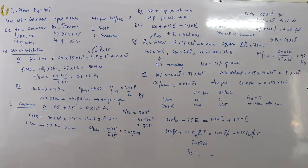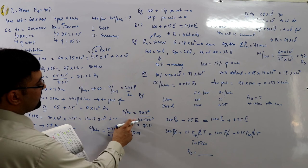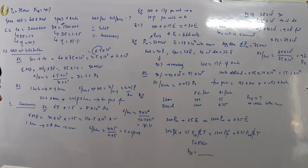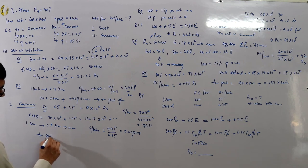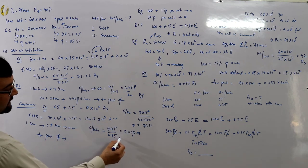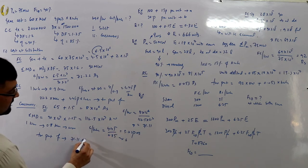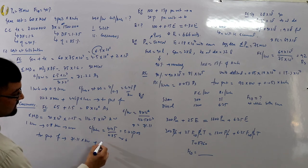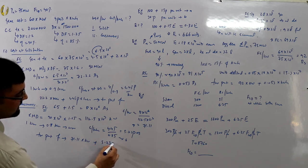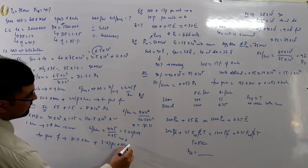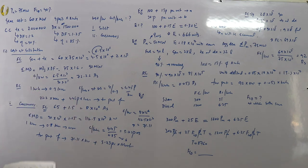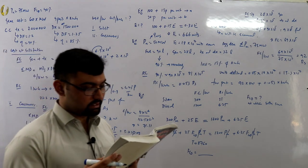The cost per kilowatt decreased because the maximum demand increased due to diversity. Two-part tariff at consumer premises: rupees 71.11 per kilowatt plus 5.23 paisa per kilowatt hour.